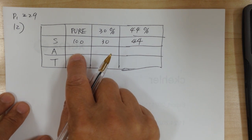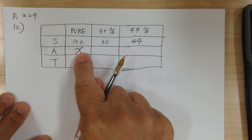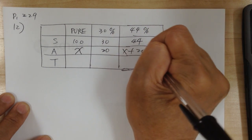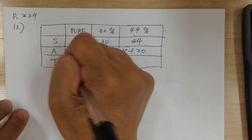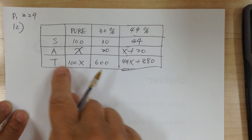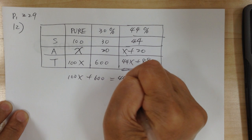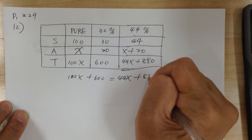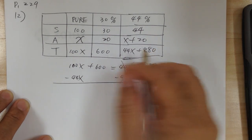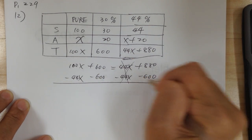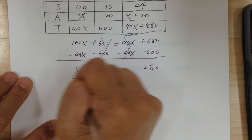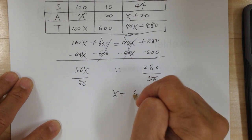Go back and figure out the amount. How many liters of pure alcohol — you don't know, so that's X. How many liters of pure alcohol must mix with 20 liters of 30% to get this? When you mix, you add: X plus 20. Multiply down the column: 100X, 600, and 44X plus 880. Here's your equation: 100X plus 600 equals 44X plus 880. Move variable to this side — minus 44X on both sides, this cancels. Move number over — minus 600 on both sides, this cancels. So 56X equals 280. Divide by 56, divide by 56. X equals 5 liters.